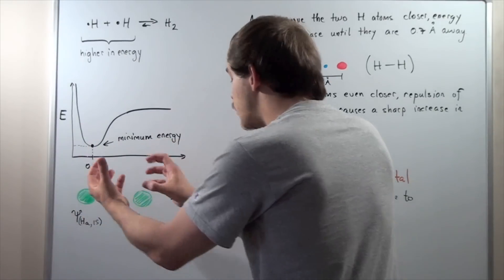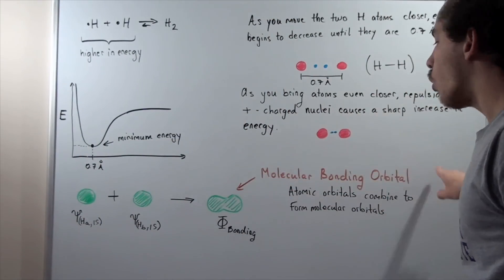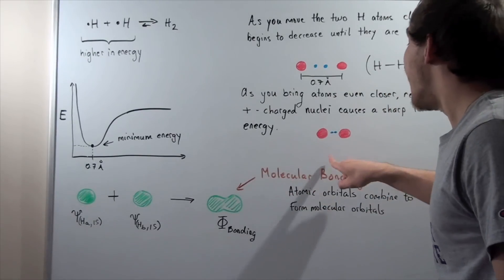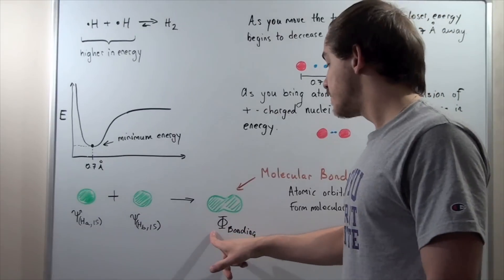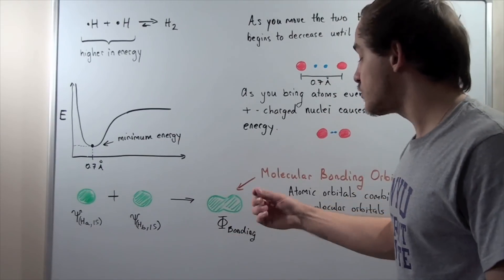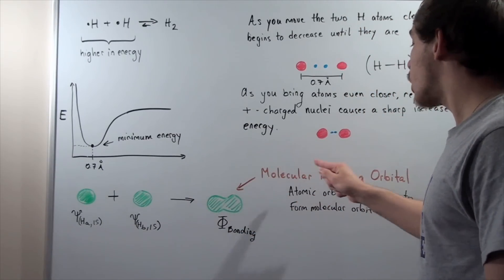And they will create something known as the molecular orbital or molecular bonding orbital. This guy is represented by phi. Phi bonding is our molecular orbital.